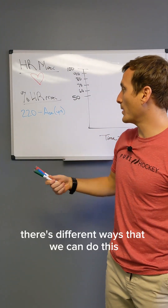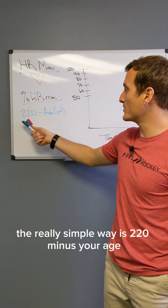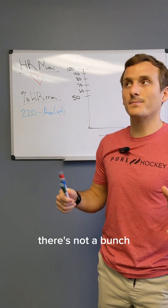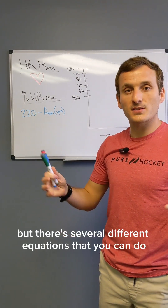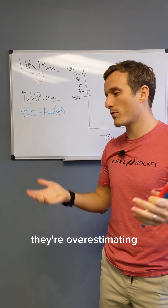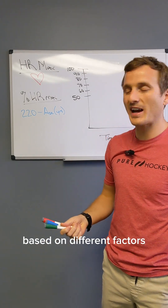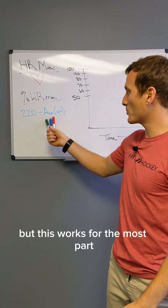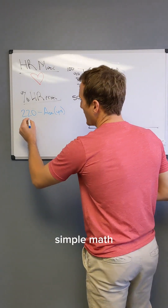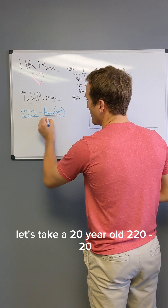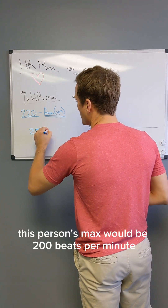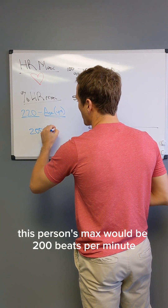There are different ways to calculate heart rate max. The really simple way is 220 minus your age. There are several different equations — they all have pros and cons, overestimating or underestimating based on different factors — but this works for the most part. So 220 minus your age: simple math. For a 20-year-old, 220 minus 20 gives a max of 200 beats per minute.